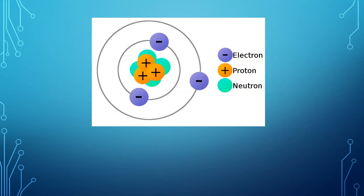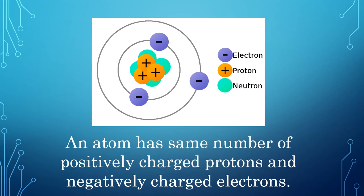Here in this picture we can see that the atom is filled with electron, proton and neutron. One more thing we notice from this picture is that an atom has same number of positively charged protons and negatively charged electrons. So, an object doesn't show any charge though its atoms contain charge particles.